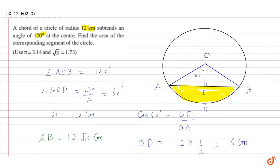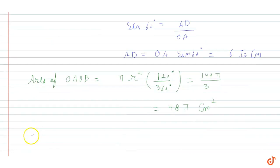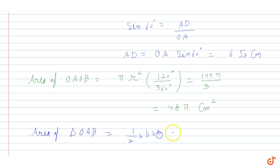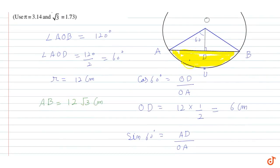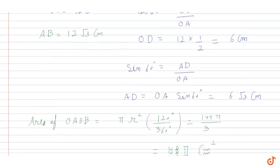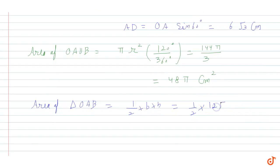The area of triangle OAB equals half times base times height. The base AB is 12√3 and the height is OD, which is 6 cm. So the area = (1/2) × 12√3 × 6 = 36√3 cm².